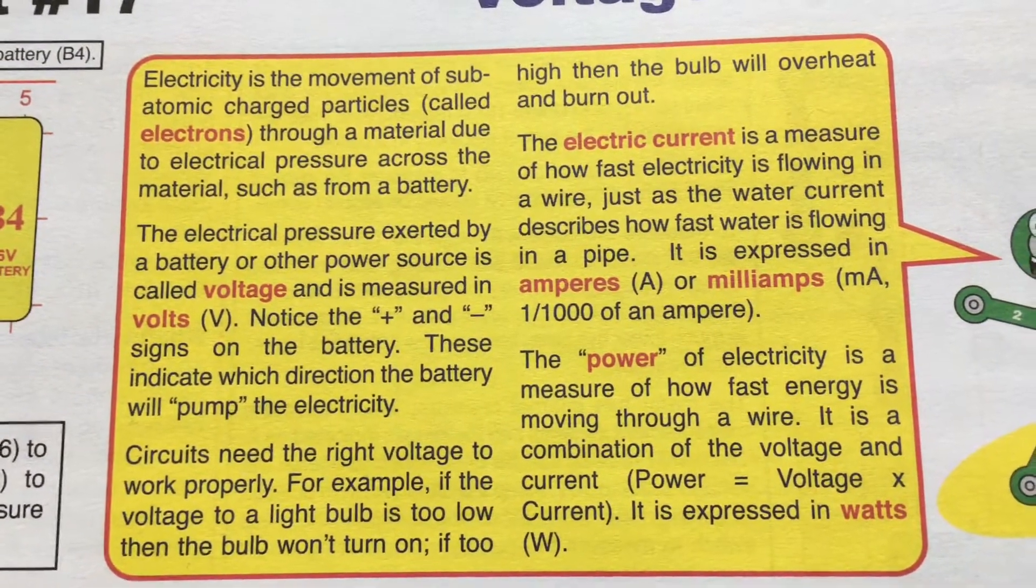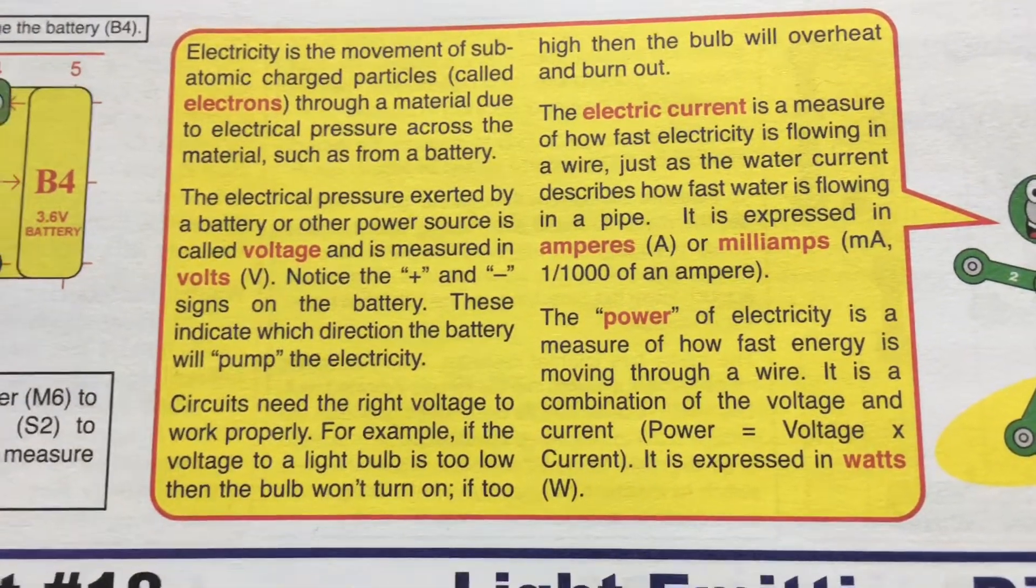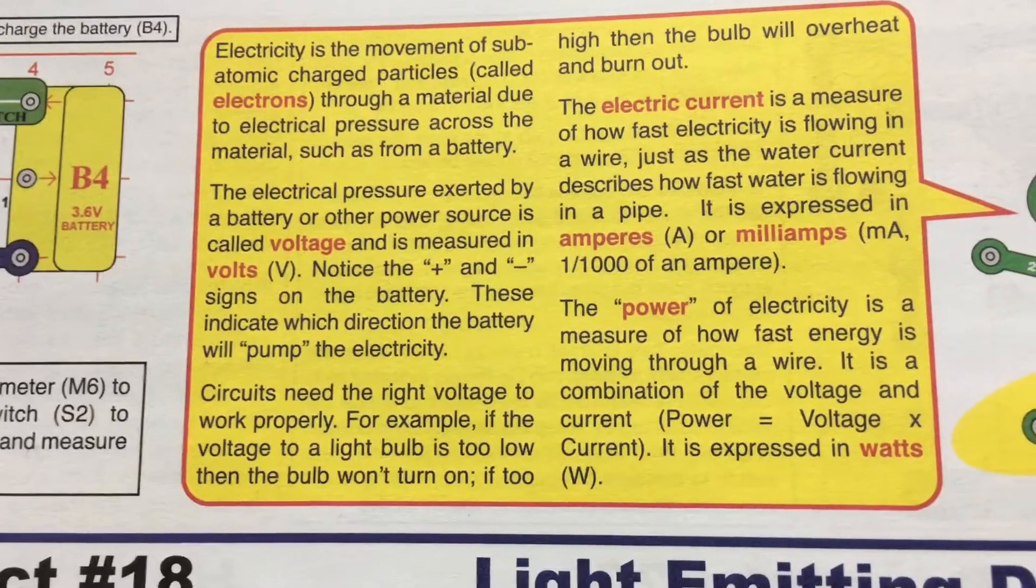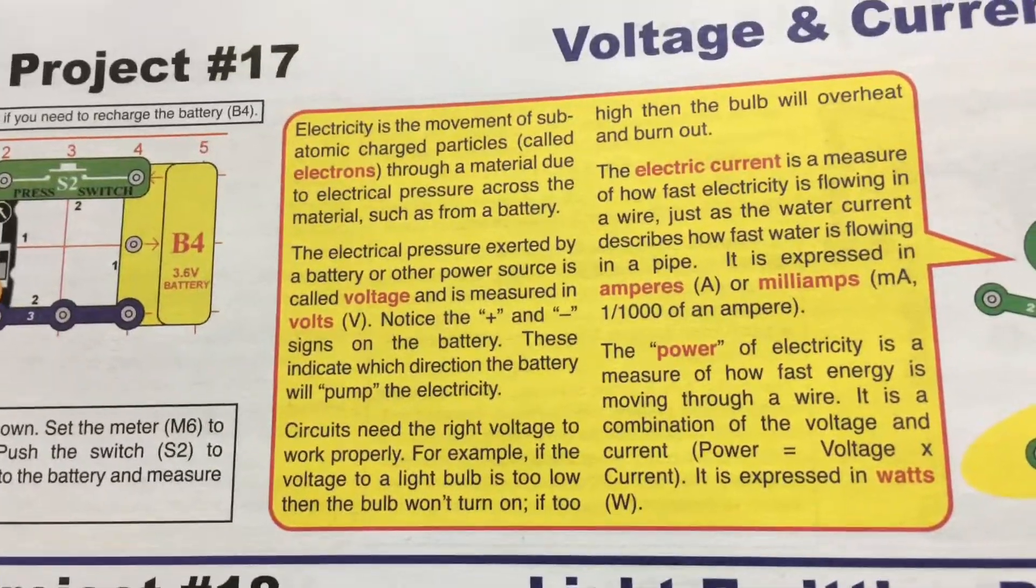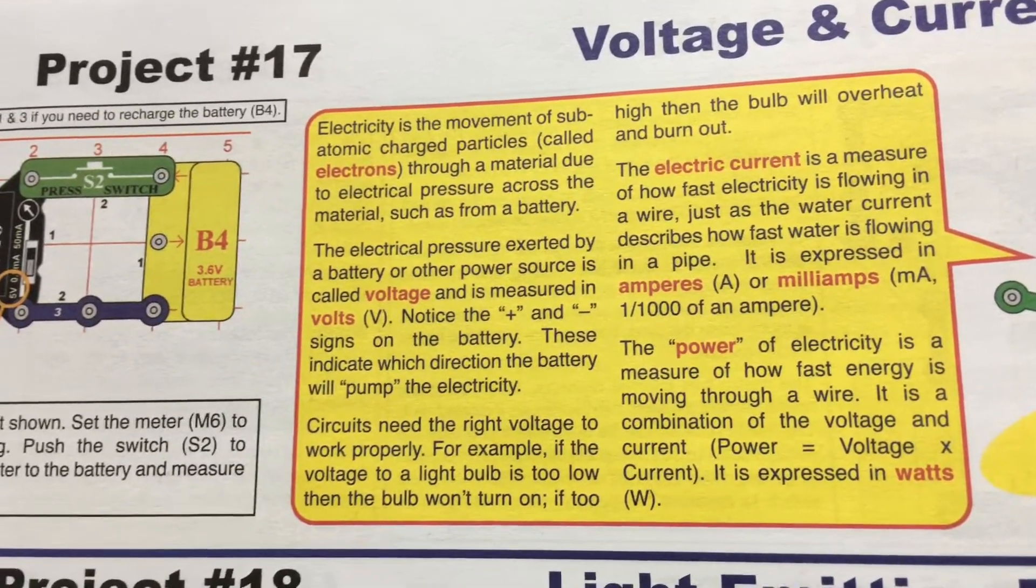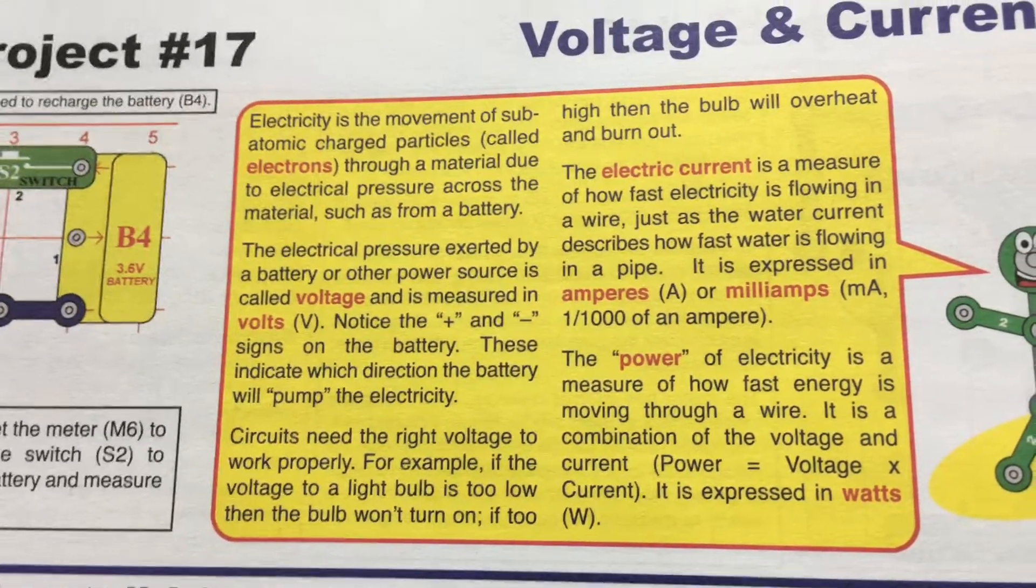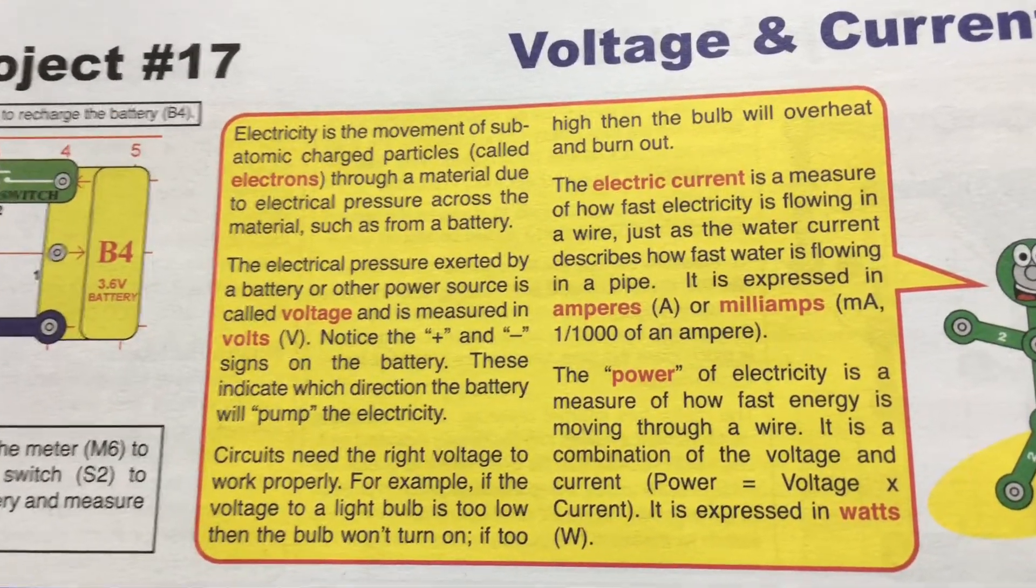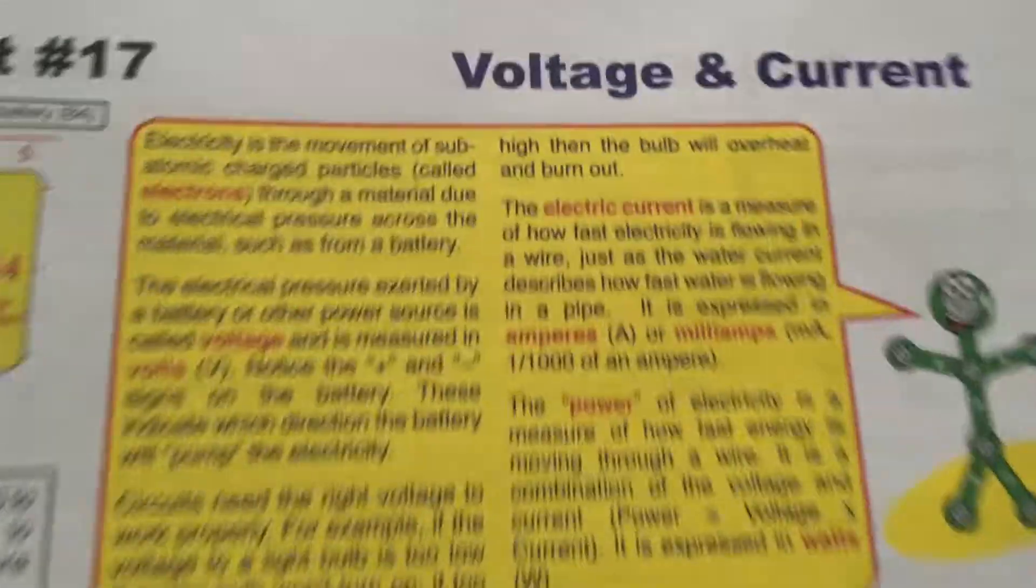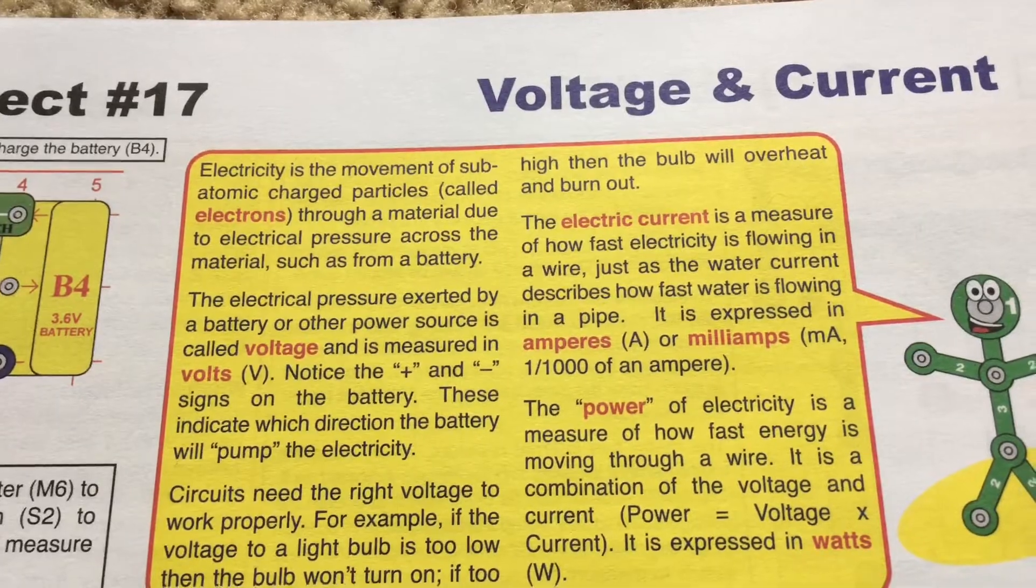Voltage is the electrical pressure exerted by a battery or other power source. Circuits need the appropriate voltage to work properly. If a light bulb does not have enough voltage, it won't work, or if the voltage is too high, the bulb will overheat and burn out. Current measures how fast electricity flows through a wire, just like water current flowing through a pipe. Current is measured in amperes, or amps, or milliamps, which is the unit on the voltage meter, MA. MA abbreviates milliamps. A milliamp is one one thousandth of an ampere.